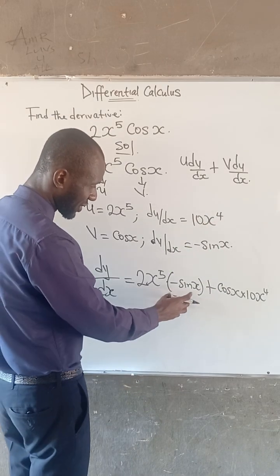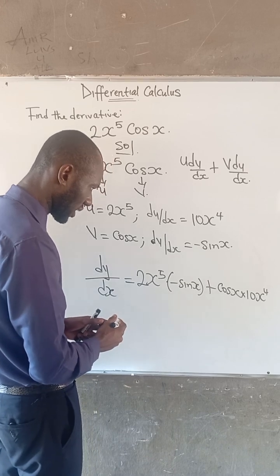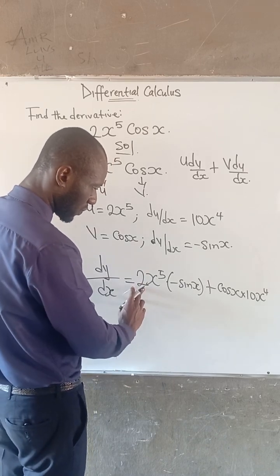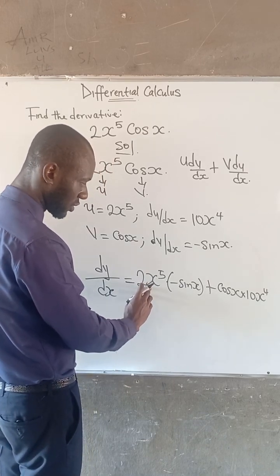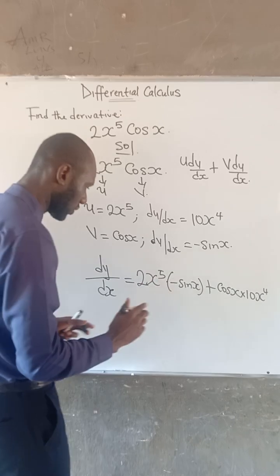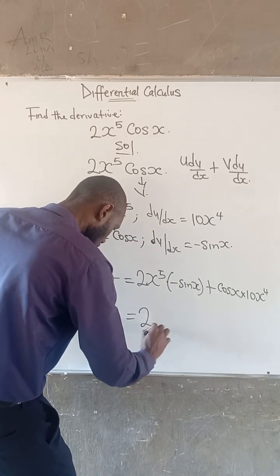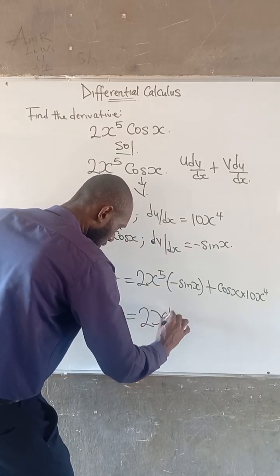So therefore, if we look at the expression on the right-hand side, we can factor out 2 multiplied by x to the power of 4. So if we do that, we have 2 multiplied by x to the power of 4.